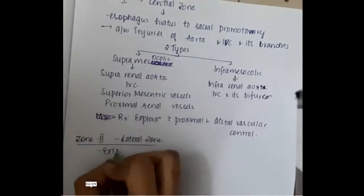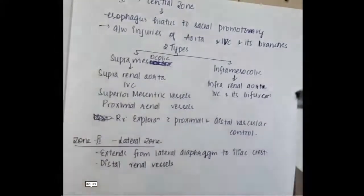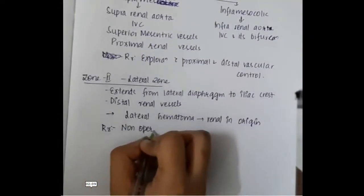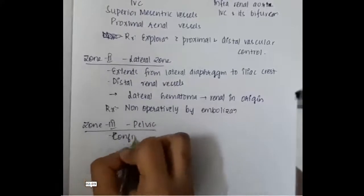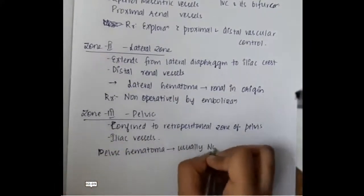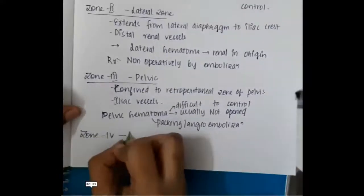Zone 2 is the lateral zone, extending from the lateral diaphragm to the iliac crest, containing the distal renal vessels. A lateral hematoma in Zone 2 is mostly of renal origin and is treated non-operatively by embolization. Zone 3 is the pelvic zone, containing iliac vessels. Pelvic hematoma is difficult to control and is not opened; packing and angio-embolization are performed instead.